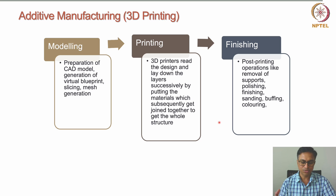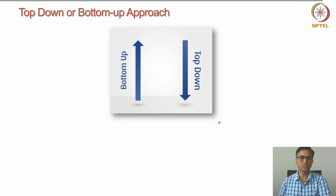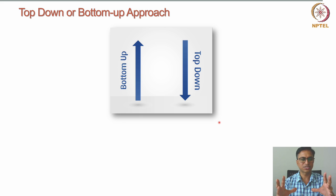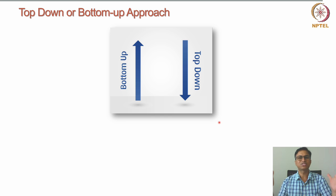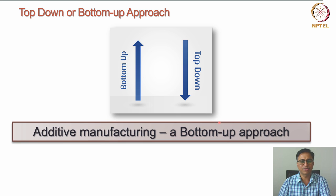The next question is whether 3D printing is a bottom-up or top-down approach. Since 3D printing is an additive process where we add materials layer by layer to build the whole structure from scratch, it is a bottom-up approach. In contrast, a top-down process starts with a larger block and cuts it down into the desired structure. So 3D printing is a bottom-up approach.